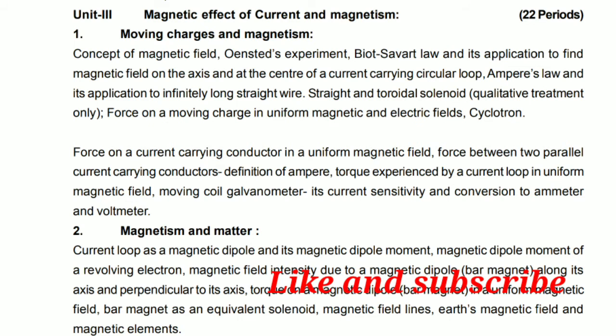We also discuss force on a moving charge in uniform magnetic and electric fields, the cyclotron — which is very important for the final examination — force on a current-carrying conductor in a uniform magnetic field, and the moving coil galvanometer, its current sensitivity, and conversion to ammeter and voltmeter.